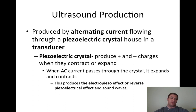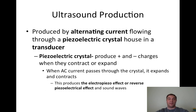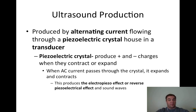Ultrasound production is produced by an alternating current flowing through a piezoelectrical crystal housed in a transducer. The piezoelectrical crystal produces positive and negative charges that cause it to expand or contract. When the AC current passes through the crystal, it literally changes shape, producing the piezoelectrical effect and sound waves. This is what actually produces the wave introduced to the body.